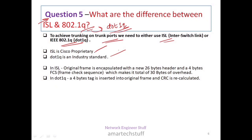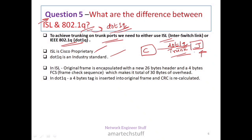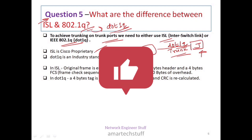An interviewer may ask this in a practical way: if there is a trunk link configured between a Cisco switch and a Juniper switch, which trunking protocol should you use — ISL or dot1q? The answer is dot1q, because Juniper switches do not support ISL.